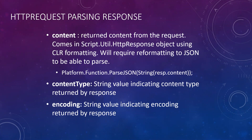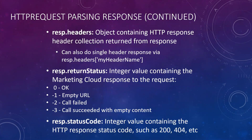Outside of that, there is the ability to get content type via resp.contentType, which is a string indicating what the content type of the response is. Then you have the encoding, which is a string value showing what type of encoding there is. Then you have the headers, which contain all the headers collected from the response. You can pull just specific headers by doing resp.headers and then the header name in brackets.